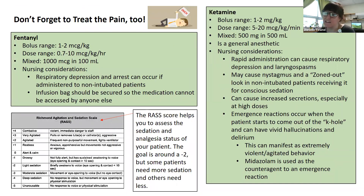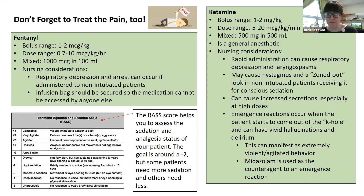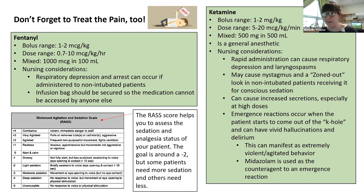For pain: fentanyl infusion is great for most intubated patients needing pain control. Bolus range is 1 to 2 mcg/kg; dose range is 0.7 to 10 mcg/kg/hr; mix 1000 mcg in 100 mL. If a patient is not intubated, they should not be on a fentanyl infusion because it causes respiratory depression and arrest. Fentanyl boluses for pain are completely appropriate for non-intubated patients with close monitoring. The infusion bag should be secured in a lock box so the medication can't be accessed by anyone else.